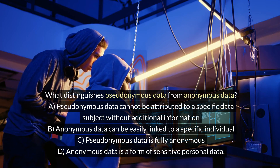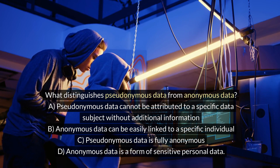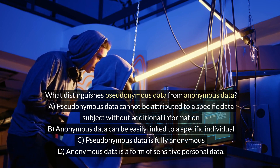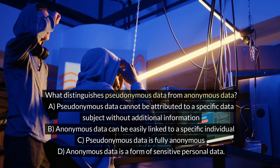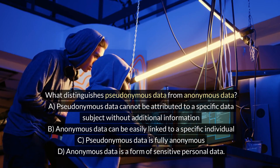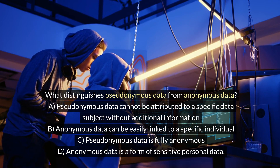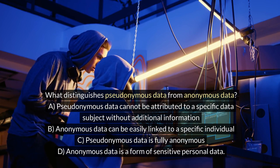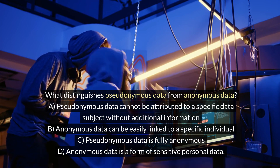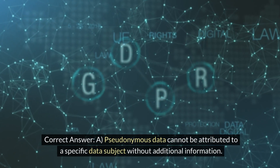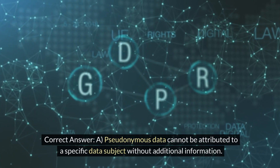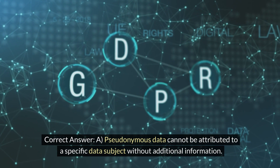What distinguishes pseudonymous data from anonymous data? A. Pseudonymous data cannot be attributed to a specific data subject without additional information. C. Pseudonymous data is fully anonymous. D. Anonymous data is a form of sensitive personal data. Correct answer: A. Pseudonymous data cannot be attributed to a specific data subject without additional information.